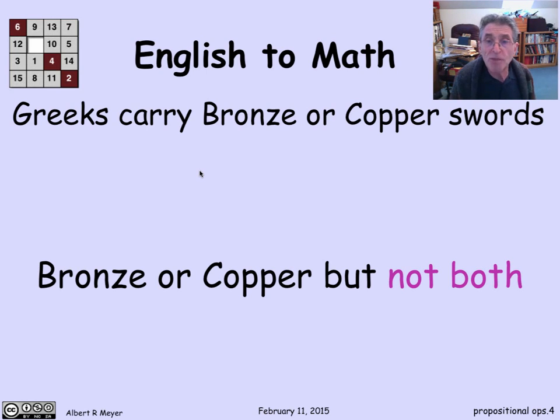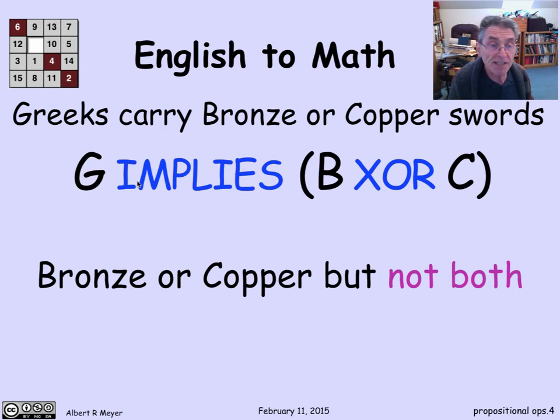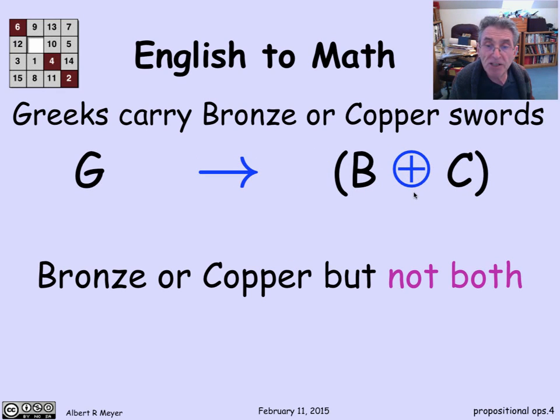It's not worth the weight to carry this inferior copper sword when you have a much better one. So this time we mean that Greeks carry exactly one of a bronze or a copper sword. Now we translate that into Greek implies B for bronze or C for copper. But this time we use the XOR. XOR means that one of them is true exactly, but not both and not neither. There's this plus sign notation for XOR because it acts a little bit like adding numbers mod 2 where 1 plus 1 is 0.